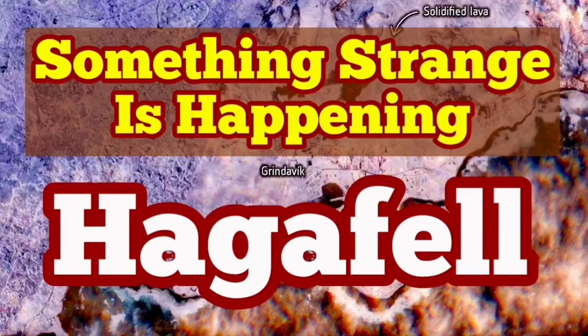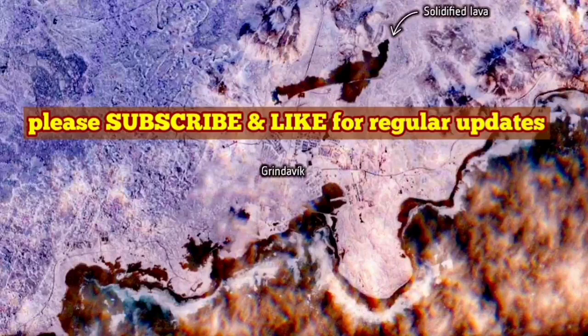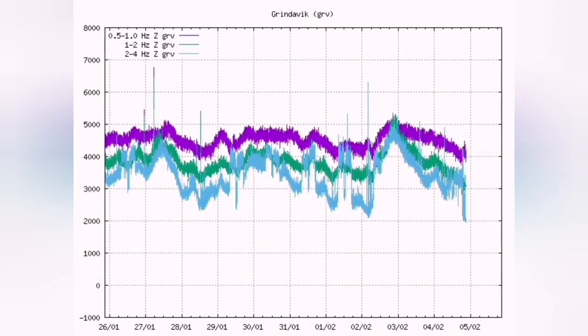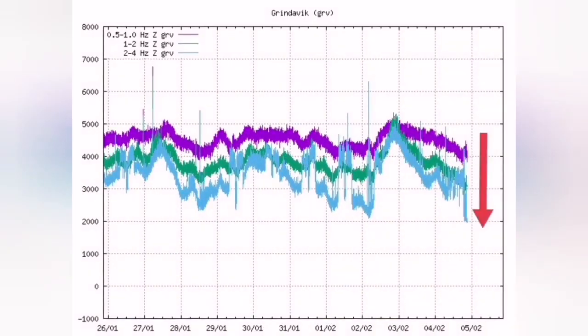Something strange is going on, and that is what we see through the charts for earthquakes and tremors. This is a harmonic tremor chart. A big dip suddenly happened at this hour. Last time we had such a big dip, seven hours later we had a big jump and eruption started.